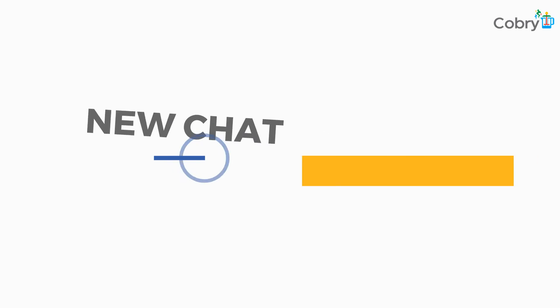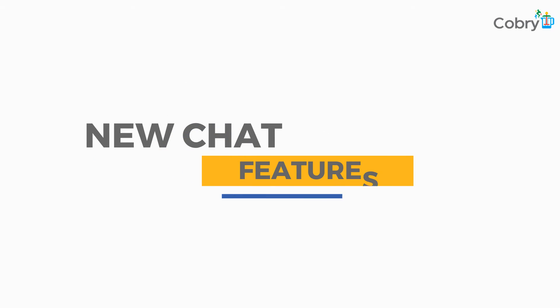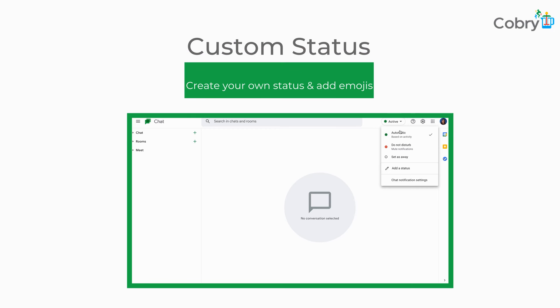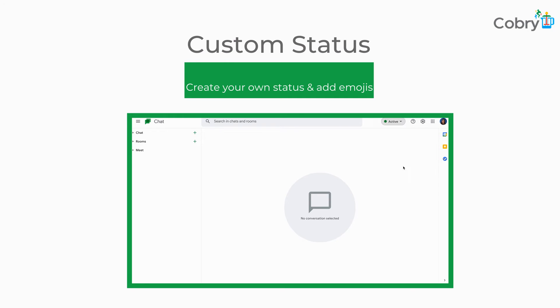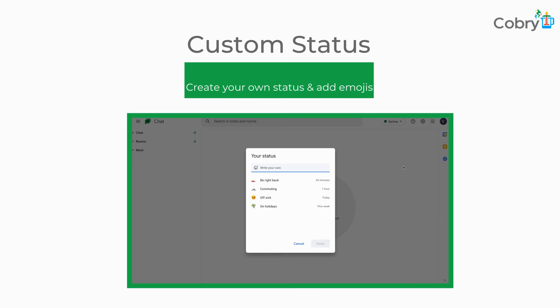One of the most recent additions we've noticed is custom statuses that you can now add into Google Chat. Before, you could only get to either active or away, but now you can actually add your own custom ones — things like showing you're on lunch or in a meeting.